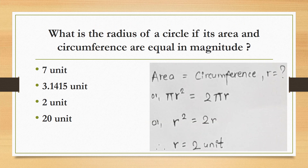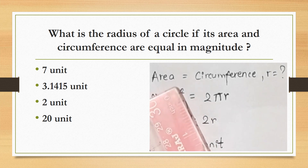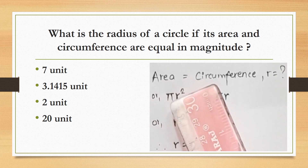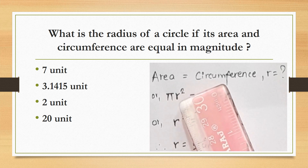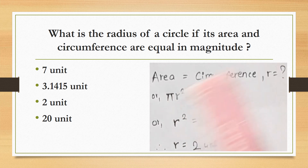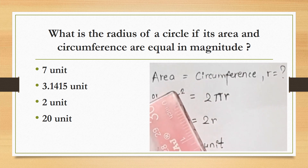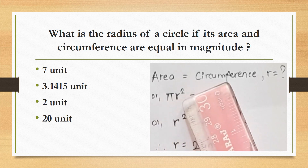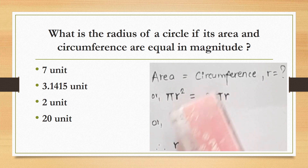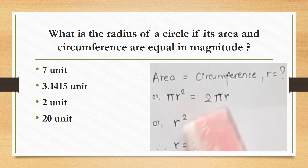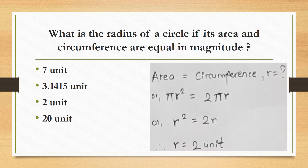What is the radius of a circle if its area and circumference are equal in magnitude? It means the area of the circle equals the circumference, so πr² equals 2πr. Cancelling π and r from both sides, we get r equals 2 units.